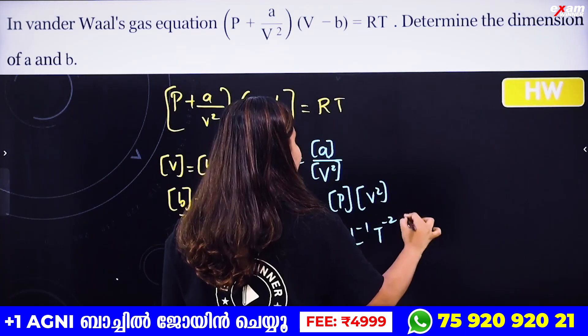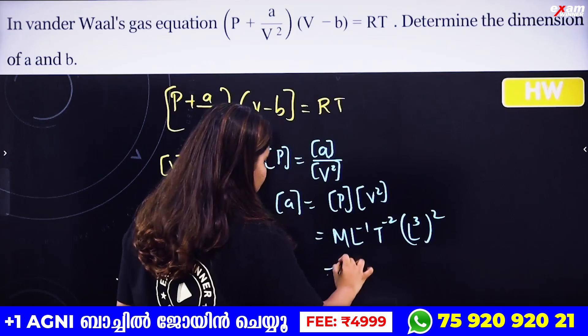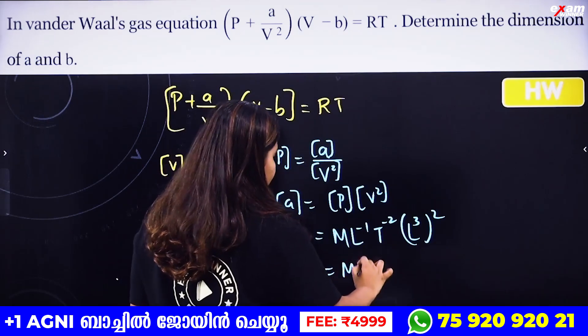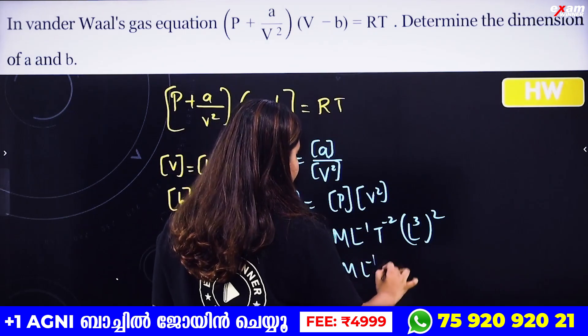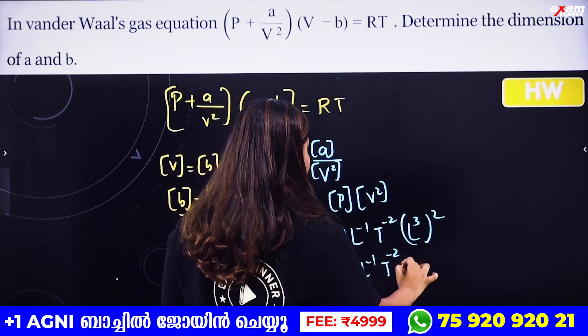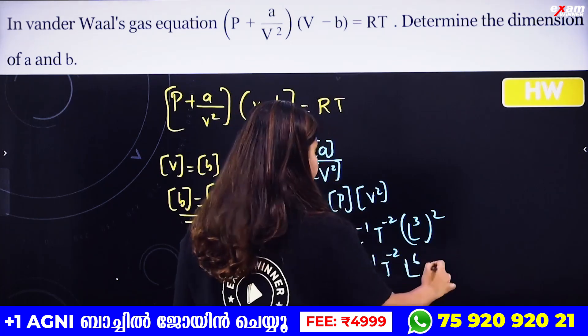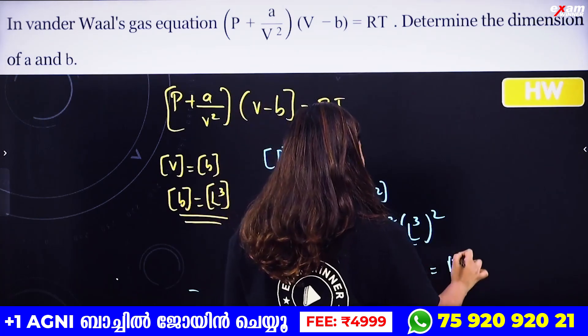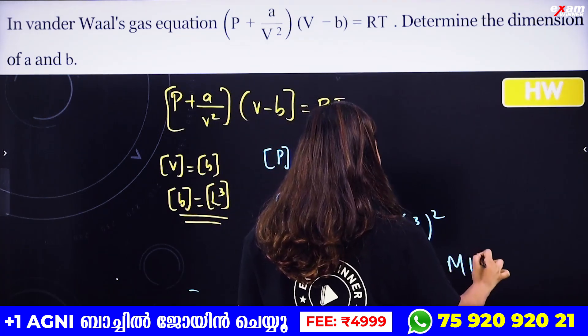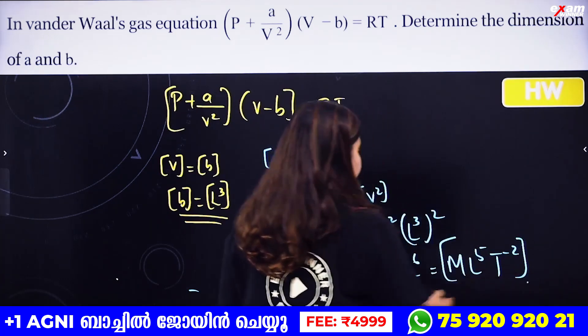Pressure has dimension ML⁻¹T⁻². V² is (L³)² = L⁶. So the dimension of a is ML⁻¹T⁻² × L⁶ = ML⁵T⁻². And since (V − b) must have the same dimension as V, the dimension of b is L³.